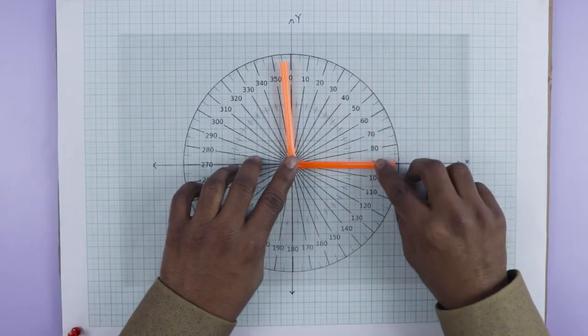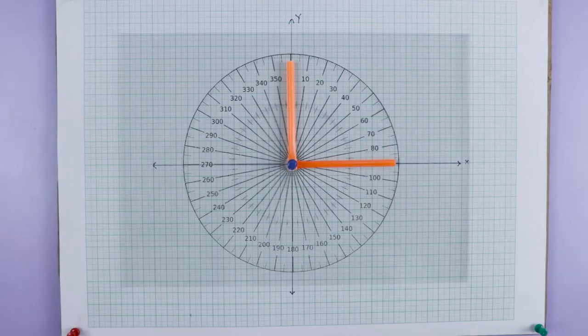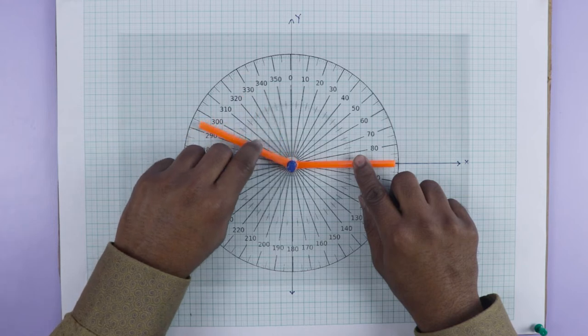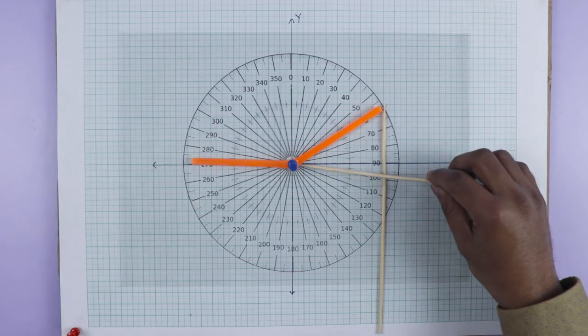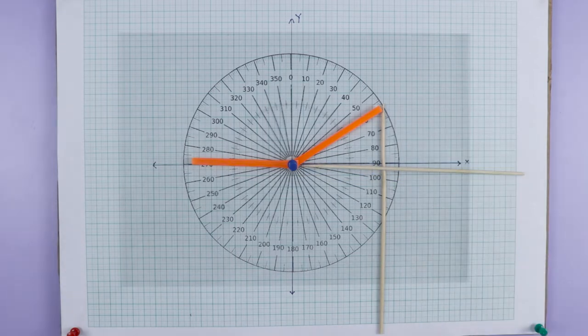Once the apparatus was ready, I asked students to keep the pen refill at different angles with respect to X axis and find out the slope at that particular spot using the hand of the clock.